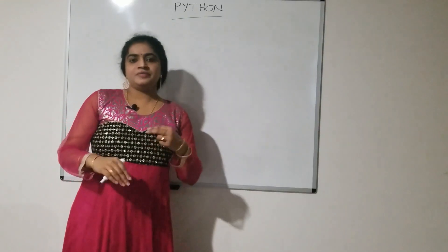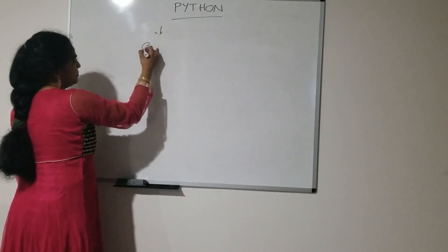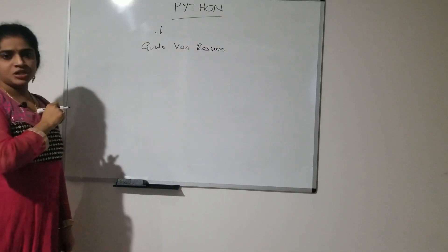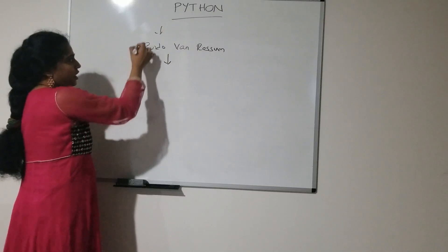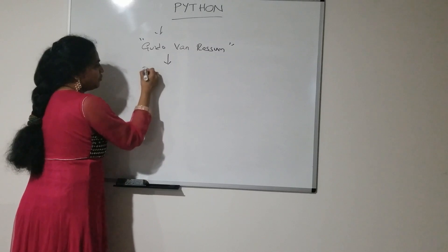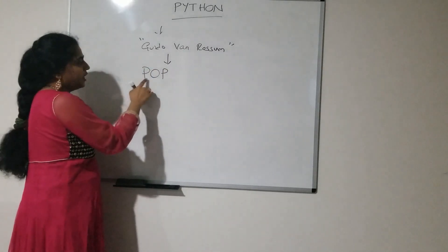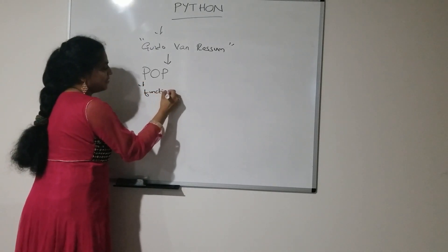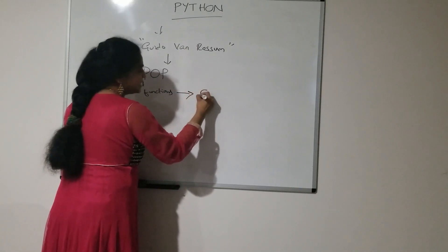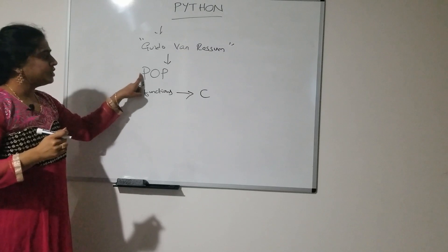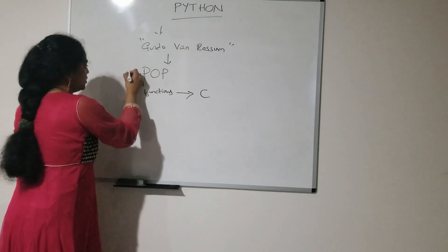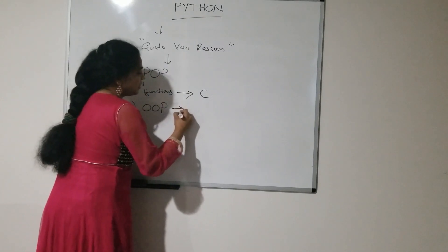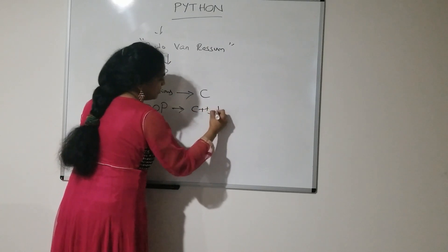While developing Python, Guido van Rossum — the father of Python — borrowed features from procedure-oriented programming languages. Procedure-oriented programming means the programming language which depends upon procedures, and procedures are nothing but functions. The best example for procedure-oriented programming language is C. Next, coming to object-oriented programming — programming language which depends upon objects — the best examples are C++ and Java.